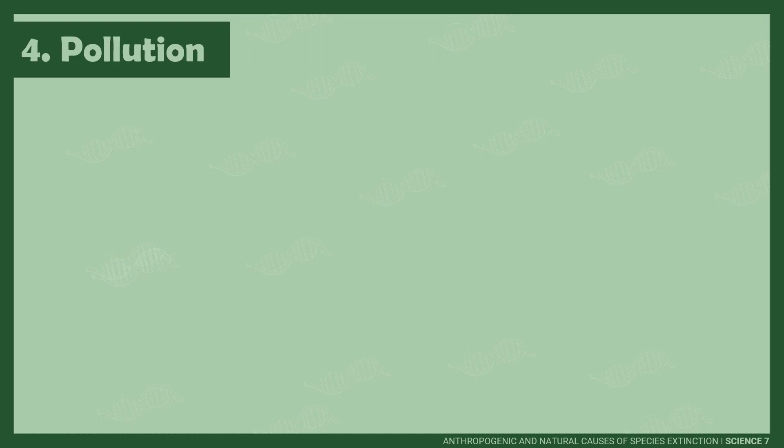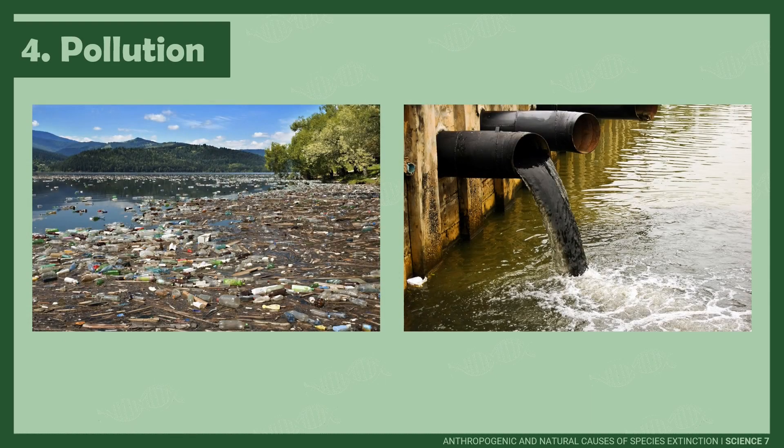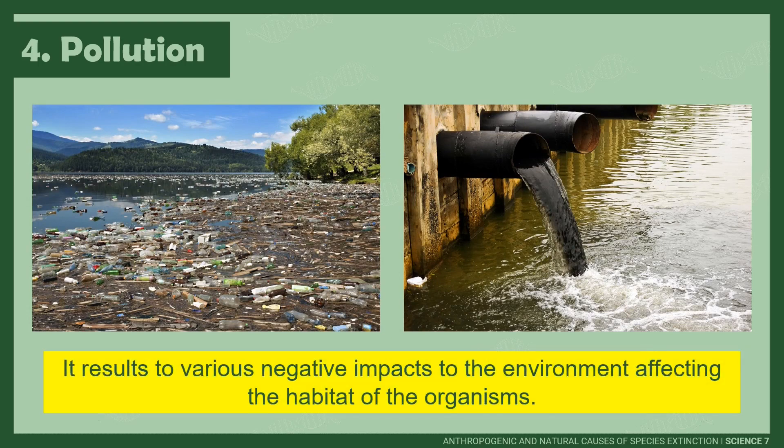And lastly, pollution. Polluting the different bodies of water reduces the oxygen level for marine life sustenance. On the other hand, land pollution gives way to the emergence of diseases that may be deadly to wildlife. Air pollution could lead to acid rain formation which can kill plants and other organisms.